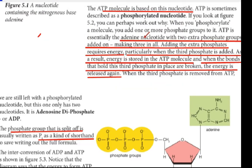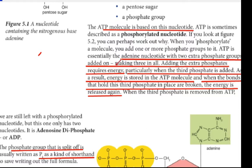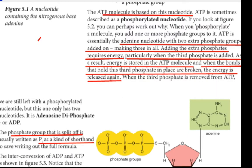ATP is essentially a cardinal nucleotide with an extra phosphate group — that is triphosphate. Adding the extra phosphate requires energy. When the phosphate is added, particularly when the third phosphate is added, energy is stored in the ATP molecule.